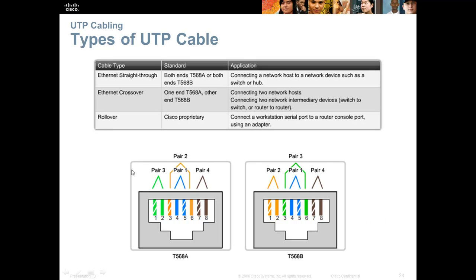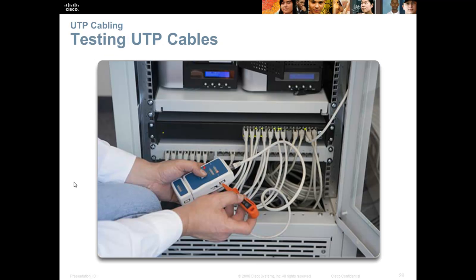There is also a rollover cable, which goes pin one through eight on one side and eight through one on the other. This is Cisco proprietary and is used to connect to the console port of a router to configure it. After any UTP cable creation or installation, we always want to test and certify the cables to ensure connectors are on correctly and there is no signal loss or attenuation.